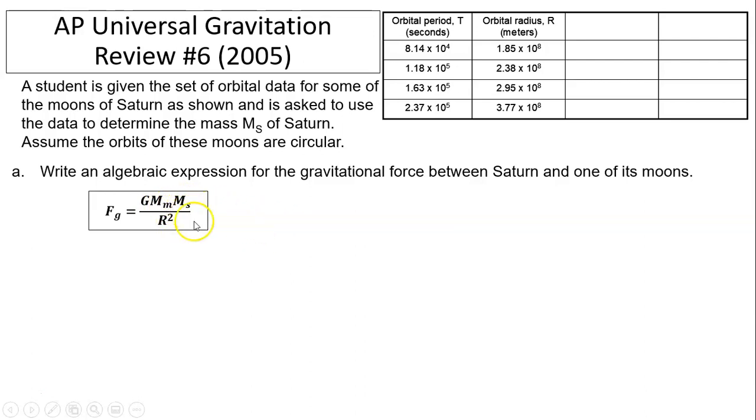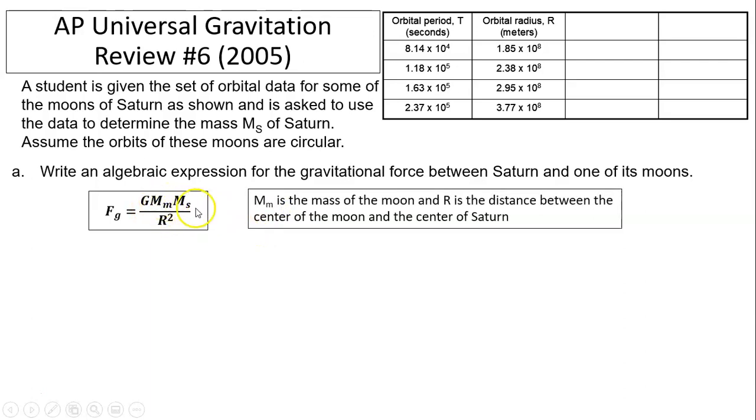In this equation, Ms is the mass of Saturn and G is the universal constant. You need to indicate Mm is the mass of the moon and r is the distance between the center of the moon and the center of Saturn.